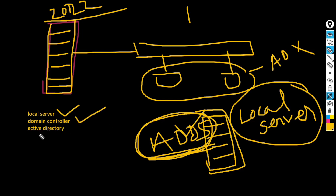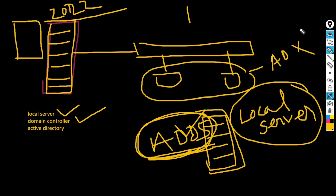What is Active Directory? Active Directory is a centralized database where all the users, groups, computers, and organizational units are stored. When we install the server, there is a centralized database where all the domain environment objects — users, groups, organizational units — are stored in the Active Directory database. So we can control all the clients through this.